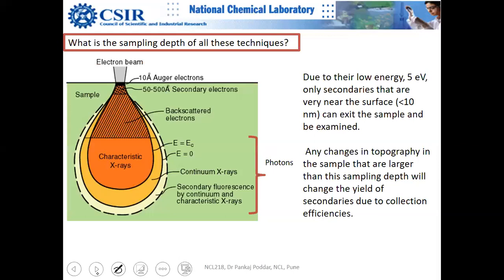The sampling depth of secondary electrons is somewhere around less than 10 to 15 nanometers, depending on the energy of the incoming electron beam, the topography of the specimen, and the atomic number Z of the material — those three things. Backscattered electrons are much higher in energy, so their sampling depth is much larger. X-rays can be picked up from even greater depth because they are photons and do not interact as strongly as electrons.